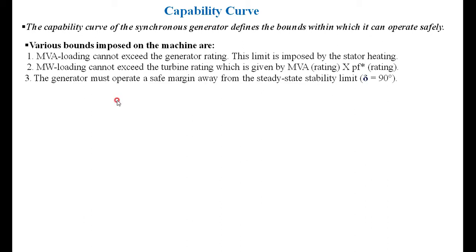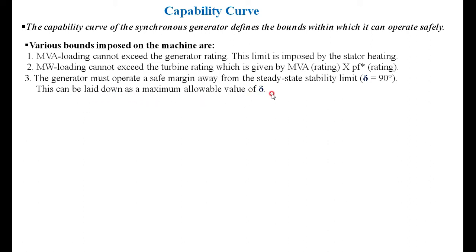The third limitation is that the generator must operate at a safe margin away from the steady state stability limit. This means you should not exceed the load angle beyond 90 degrees, within which you have to operate the generator. Whenever there is loading, there is an increase in the load angle. You should not exceed the load angle beyond delta equal to 90 degrees, within which the generator will operate safely. The maximum allowable value of delta is less than 90 degrees.